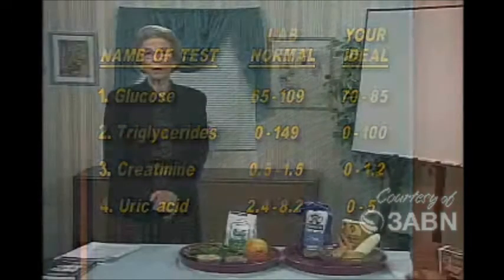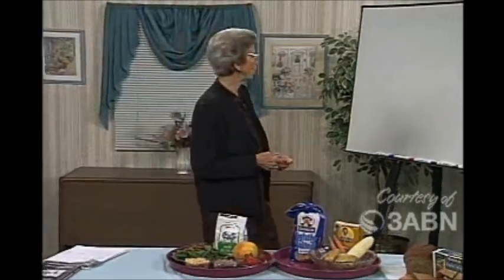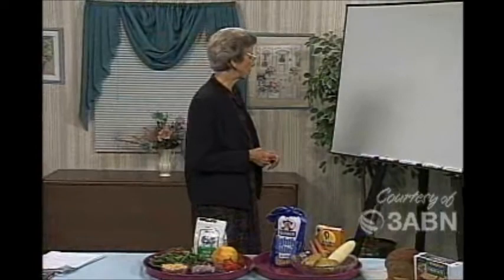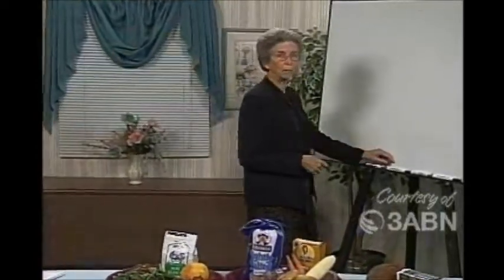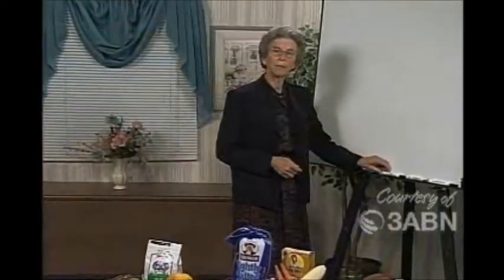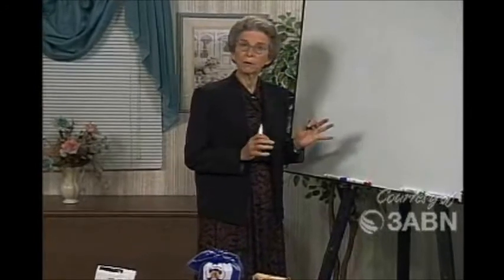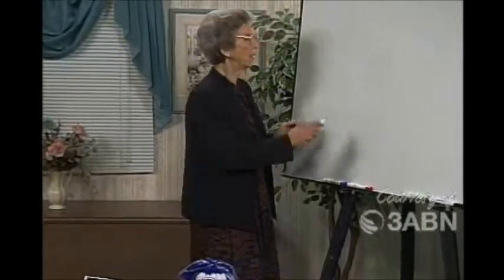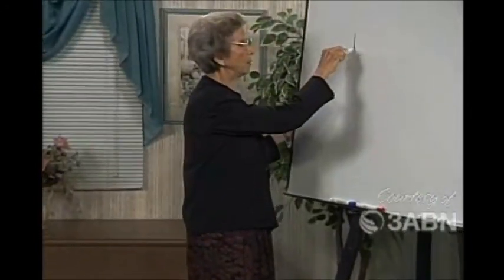Now, the glycemic index is not what the blood glucose is. We say that 70 to 85 is the blood glucose. But as we look at the board, I will show you just what we mean when we say the glycemic index, because it gives us another parameter that helps us to control diabetes.